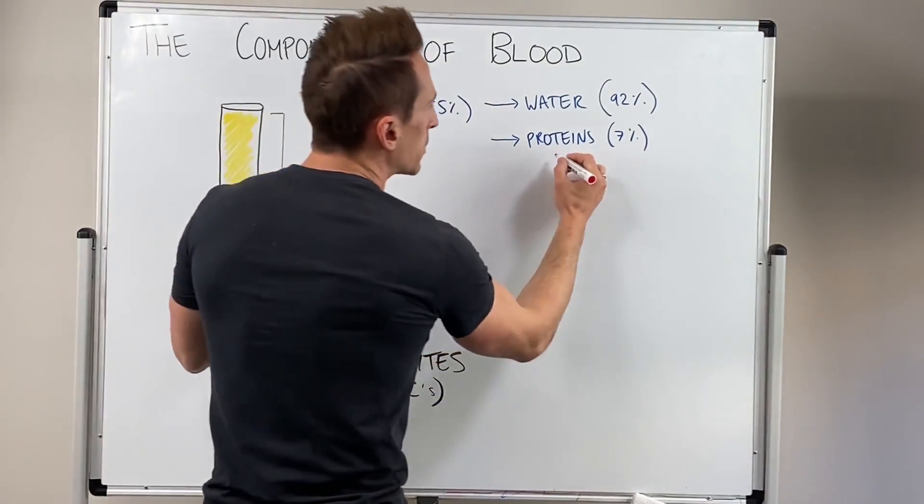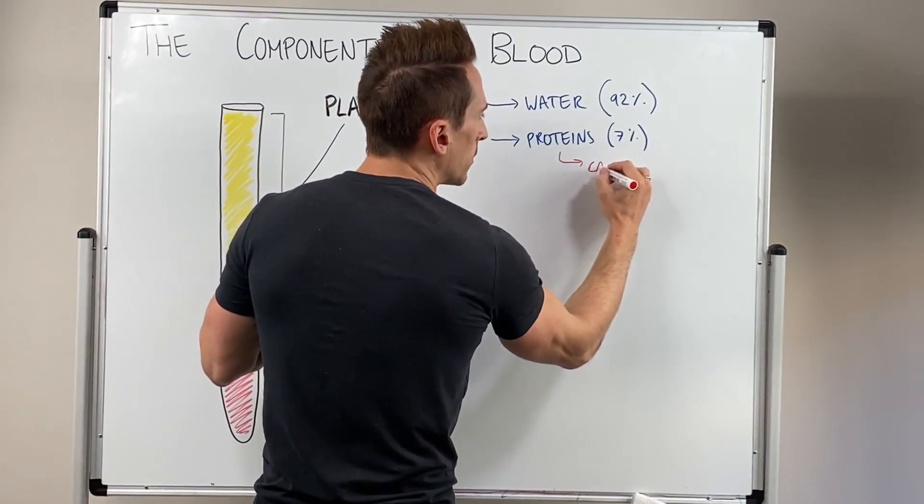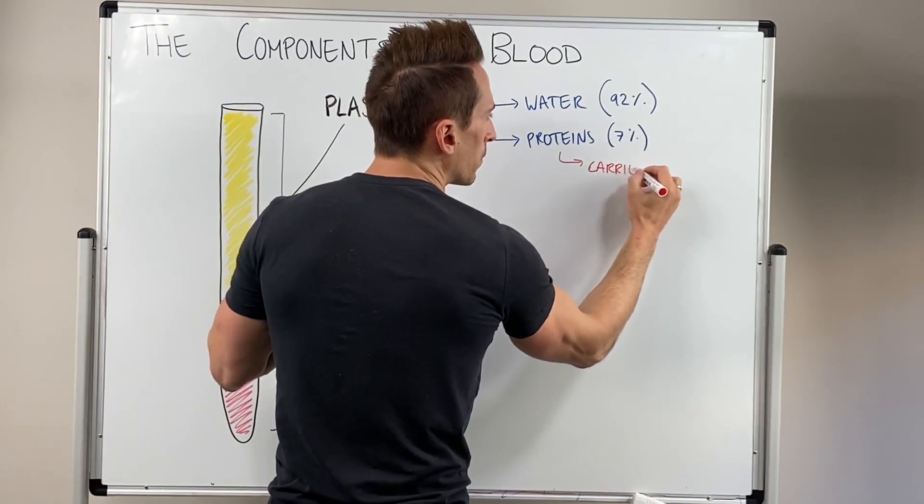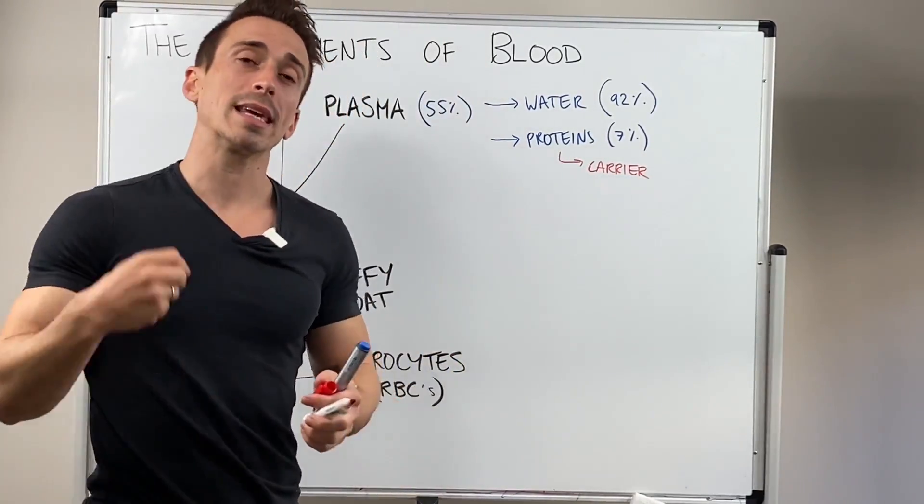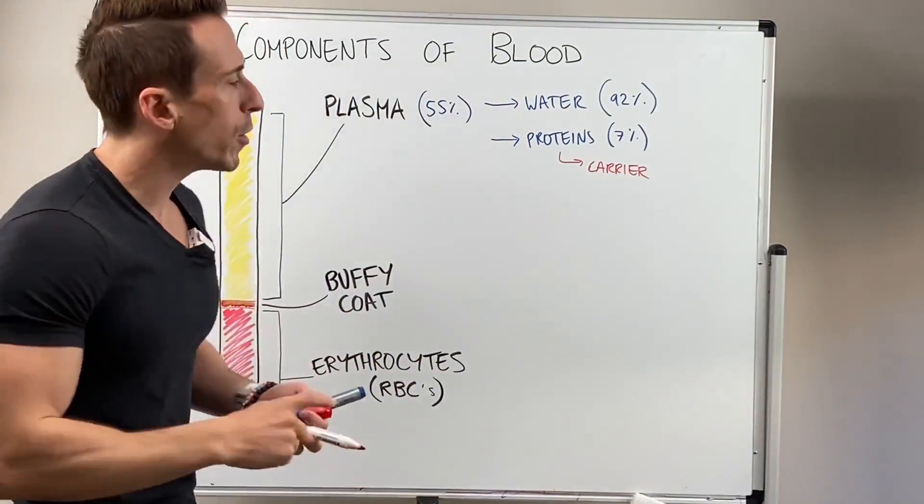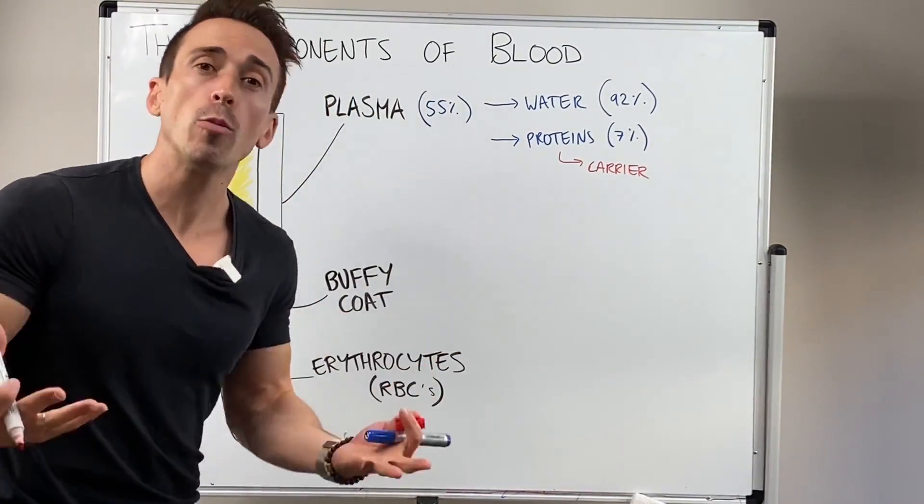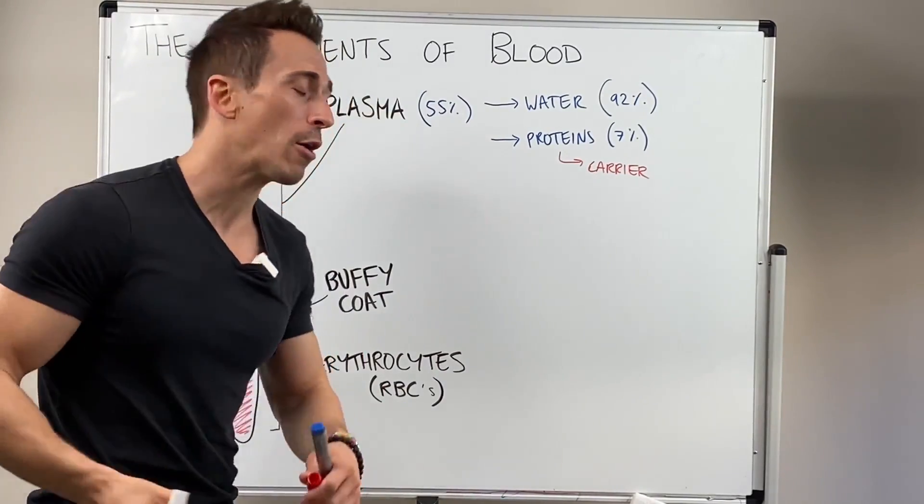First of which, there's carrier proteins. Carrier proteins can carry drugs, they can carry fats, they can carry hormones and carry a multitude of things. These include albumin, for example, probably the most abundant carrier protein.